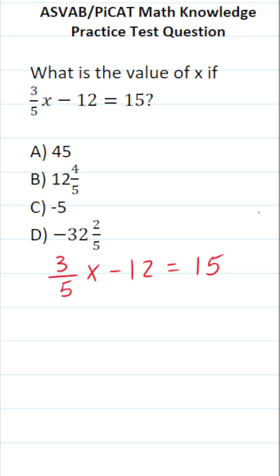We're going to be solving this equation and the first thing I'm going to do is add 12 to both sides. In doing so this crosses out, leaving us with three fifths x equals 15 plus 12, which is going to be 27.